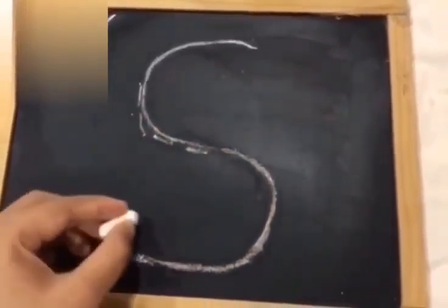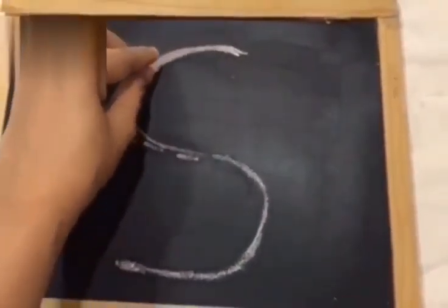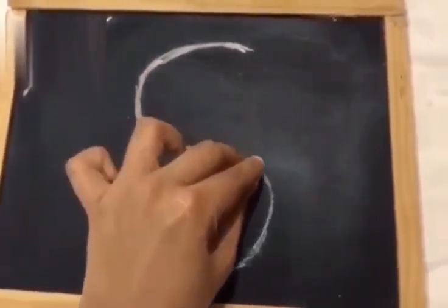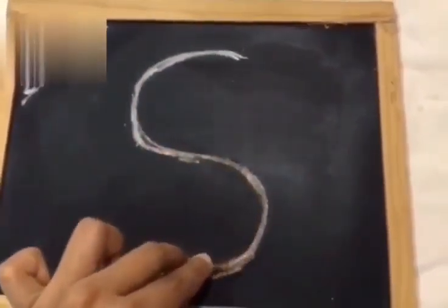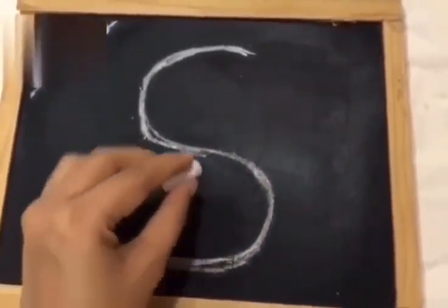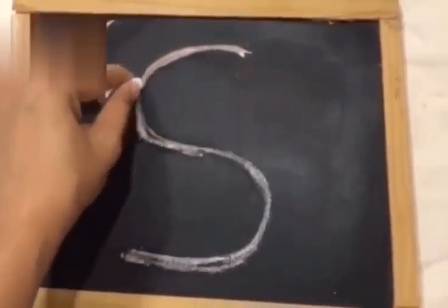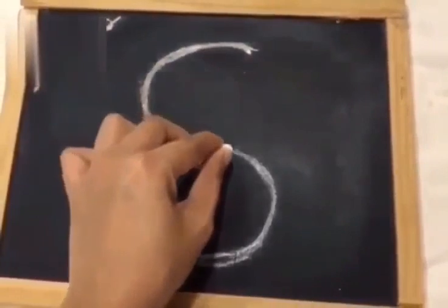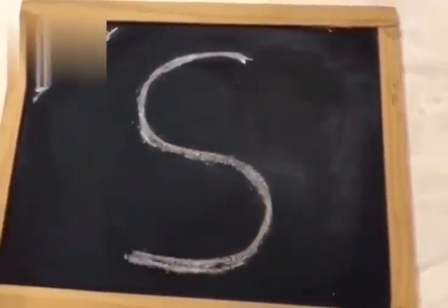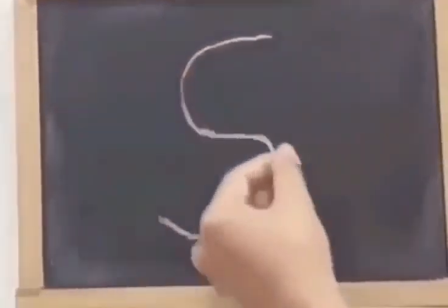This makes the alphabet S. Let's practice again. The alphabet S. Curve and curve. This is the alphabet S. S for sun.